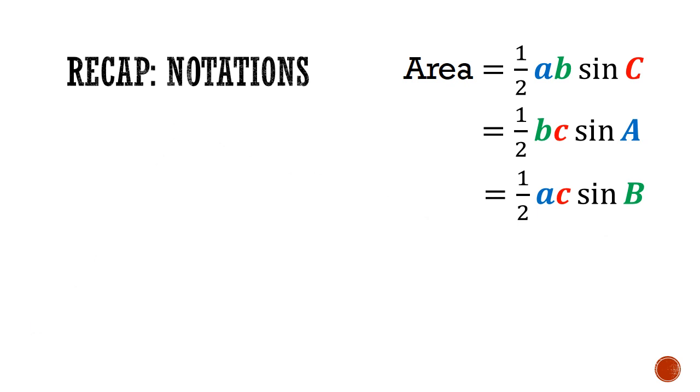With that, we have derived three different ways of finding the area of a triangle using trigonometry. From this preamble, we can now prove the sine rule.